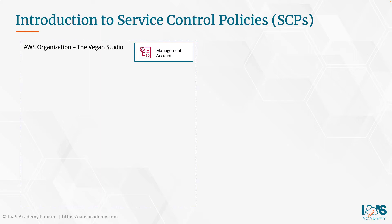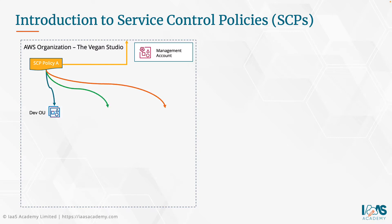Within your AWS organization, you would create one or more service control policies. A service control policy can be applied to the root of the organization, which means it affects absolutely every OU and every account in that organization. It can also be applied directly to OUs — for example, the dev OU, the test OU, and the prod OU. And if you want, you can apply service control policies directly to a member account, although that's considered bad practice.